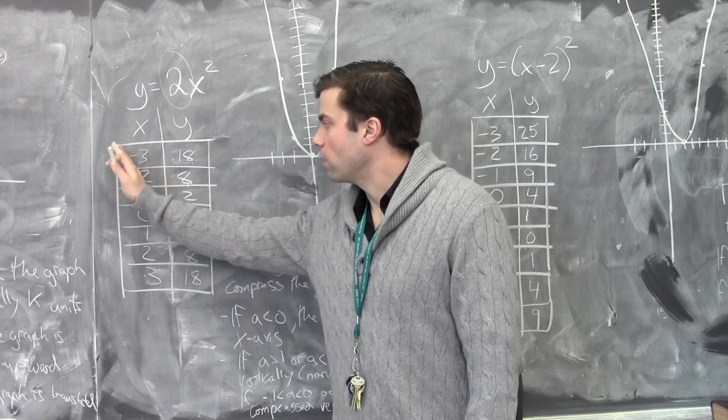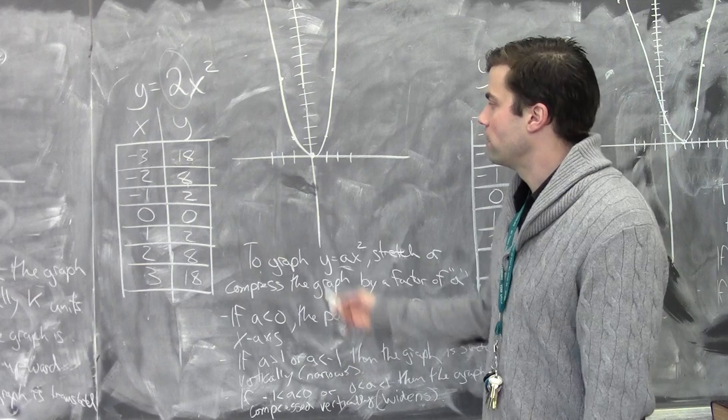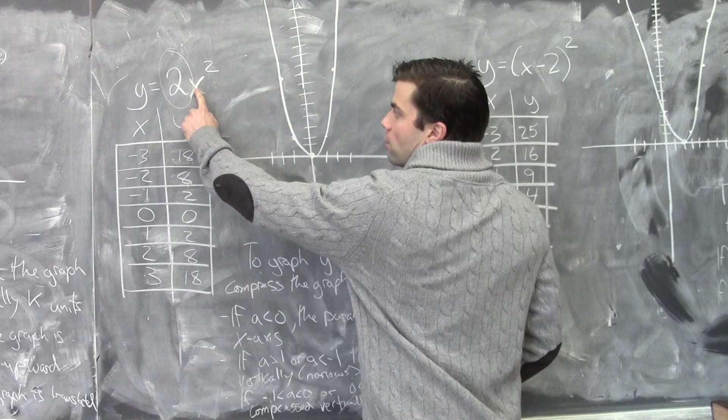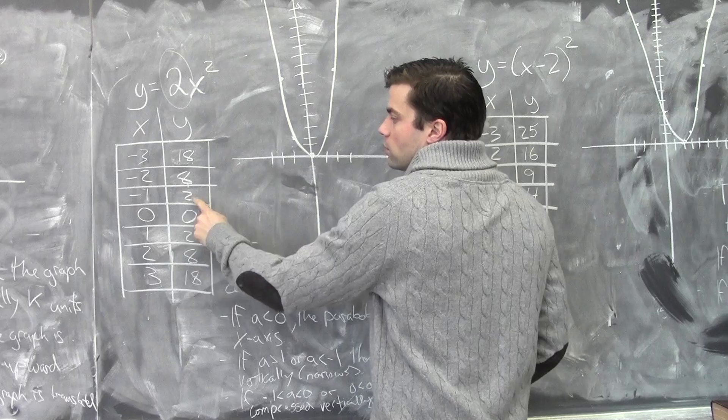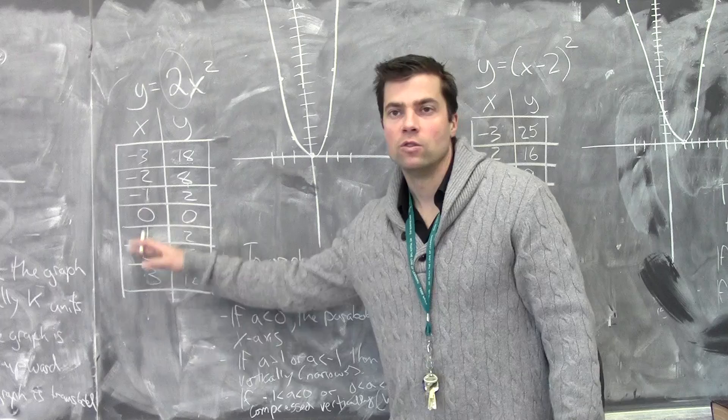Using a table of values, I give arbitrary x values separated equally on the left and right side of the y-axis, then solve for those. Plugging in -3 for x: (-3)² = 9 × 2 = 18. (-2)² = 4 × 2 = 8. (-1)² = 1 × 2 = 2. 0 × 0 = 0, and so on. That's one way to do it with a table of values.